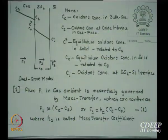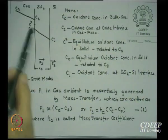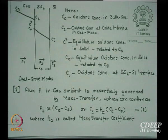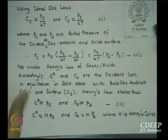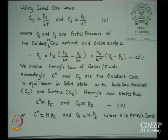We want to replace Cg and Cs, which cannot be monitored directly, with partial pressures. Using the ideal gas law, Cg = PG / KT and Cs = PS / KT, where PG and PS are the partial pressures of the oxidant at the gas ambient and oxide surface respectively. Substituting, F1 = (Hg / KT) × (PG − PS). At fixed temperature and gas flows, Hg is a constant proportional to total pressures.